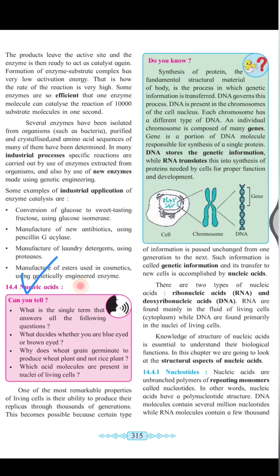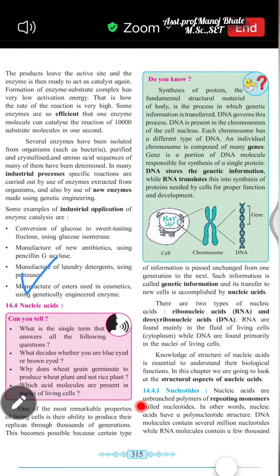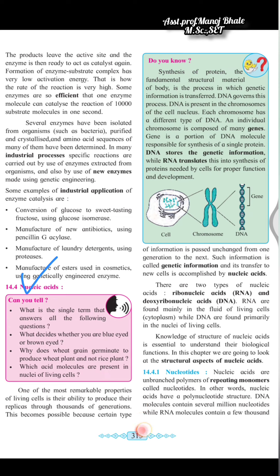Nucleic acid has the most remarkable property in the living cell, which is the ability to replicate through thousands of generations. This means replication is possible in the nucleic acid, and the information is passed unchanged from one generation to another. Such information is known as genetic information, which is transferred to the new cell through the nucleic acid. Nucleic acid is a very important thing in the living system.